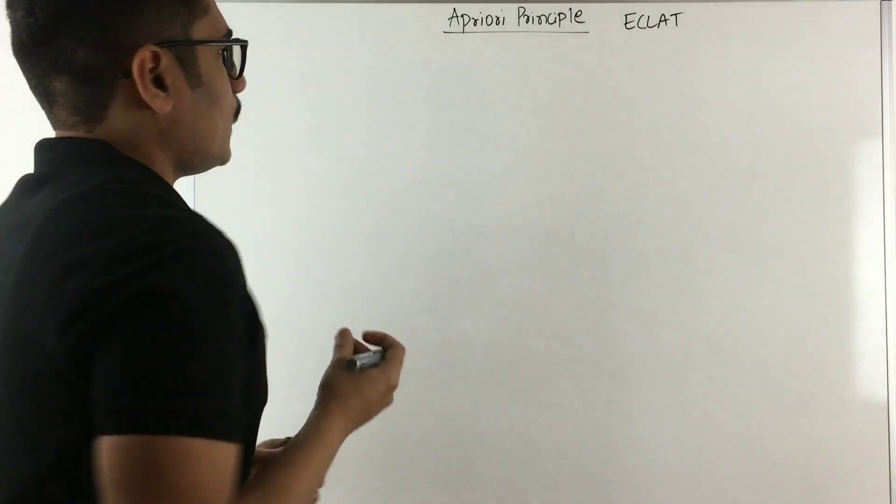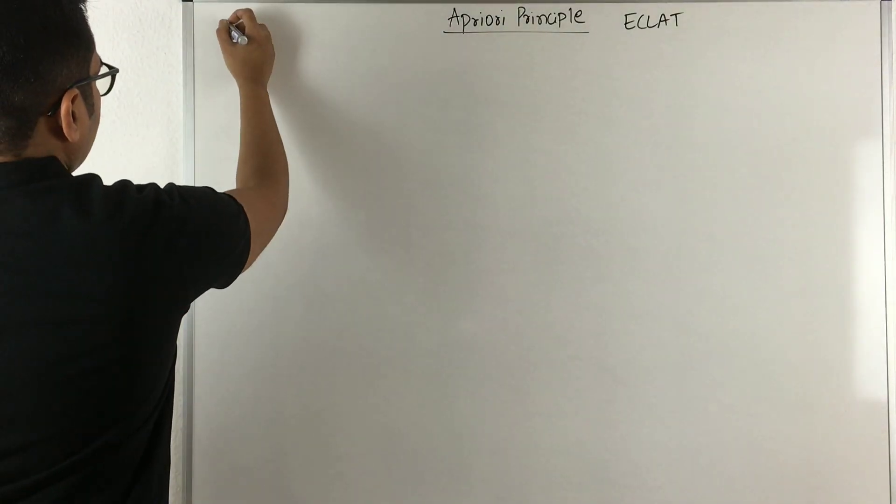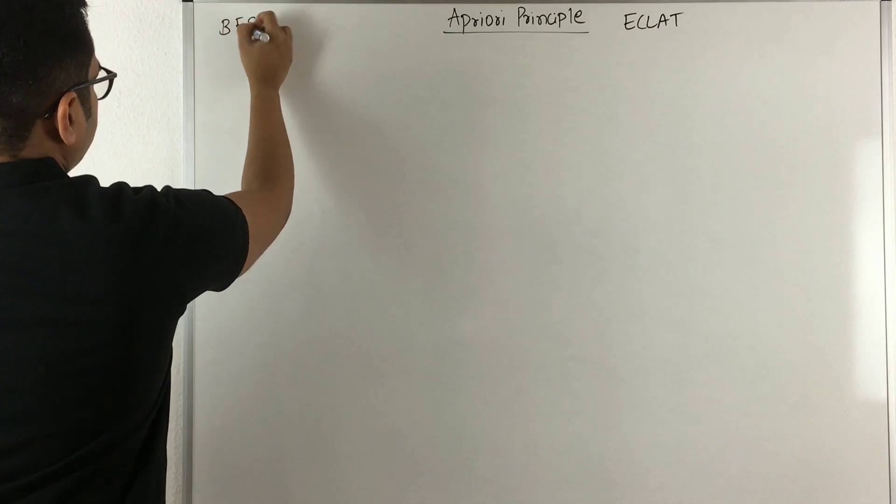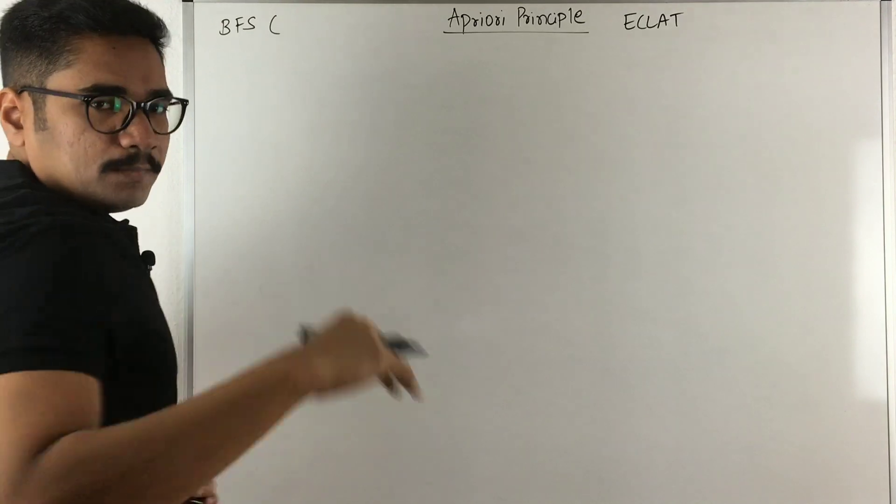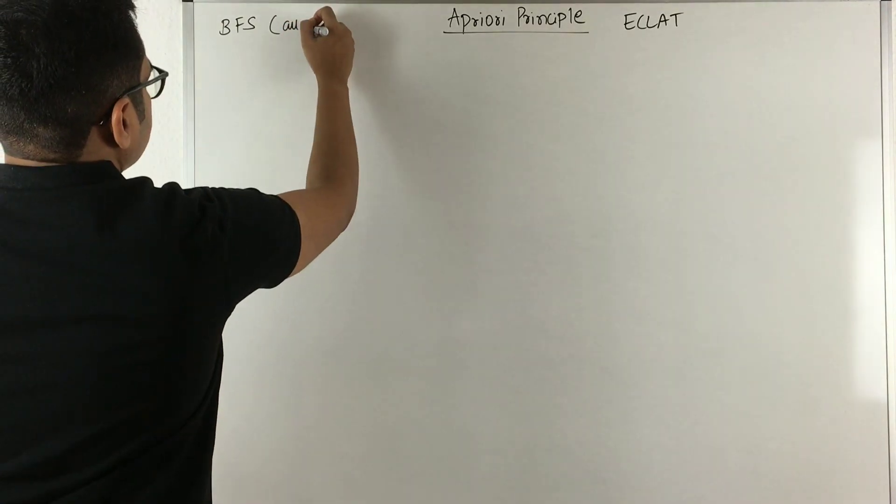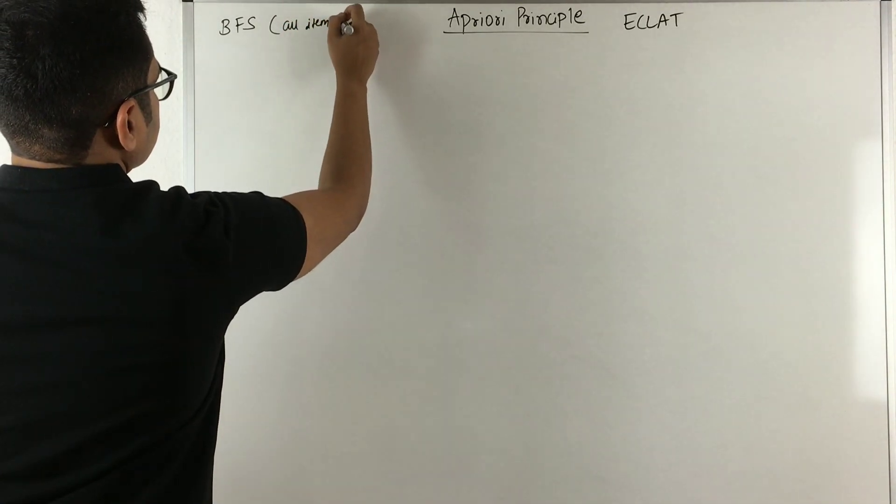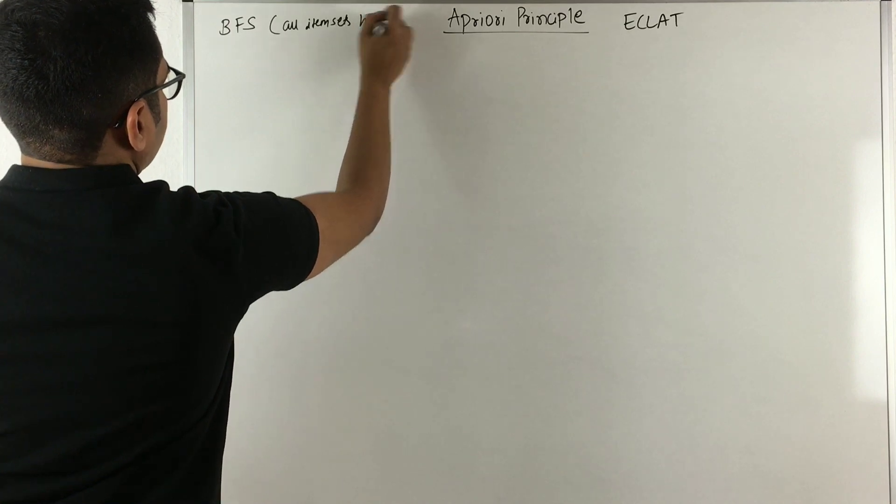When we first consider A Priori, it works in a breadth-first manner, that is BFS, meaning at the same level all item sets have the same size.